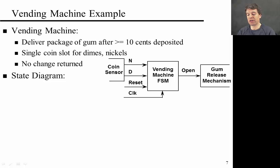So let's start with this example. It's a classic example in the field of designing a vending machine. The vending machine delivers packages of gum once you put in more than 10 cents. There's only a single coin slot where you can put in either dimes or nickels, but not both at the same time. It's just a constraint that we impose to make things simple. And the machine doesn't return any change.